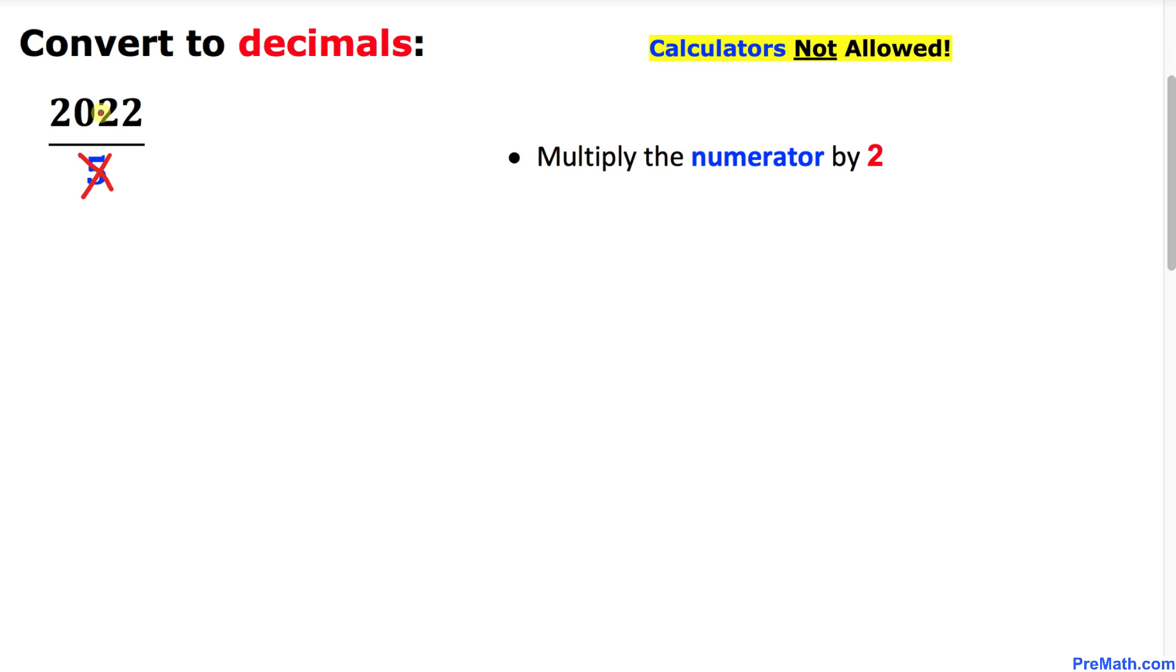Instead, multiply the numerator by 2. If we multiply 2022 times 2, that gives us 4044. Here's our final step: place the decimal one digit from the right hand side, and that's our answer.